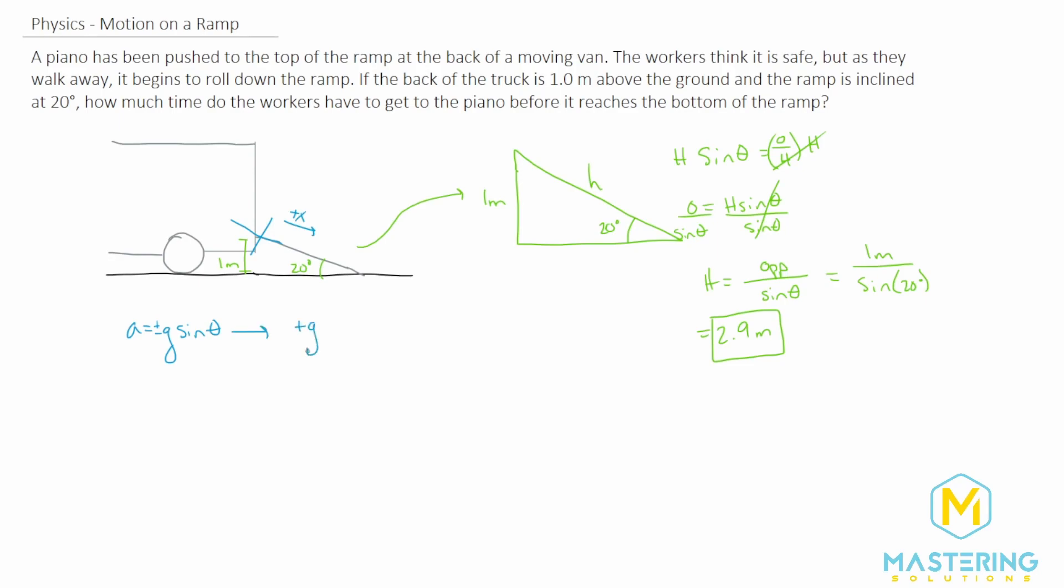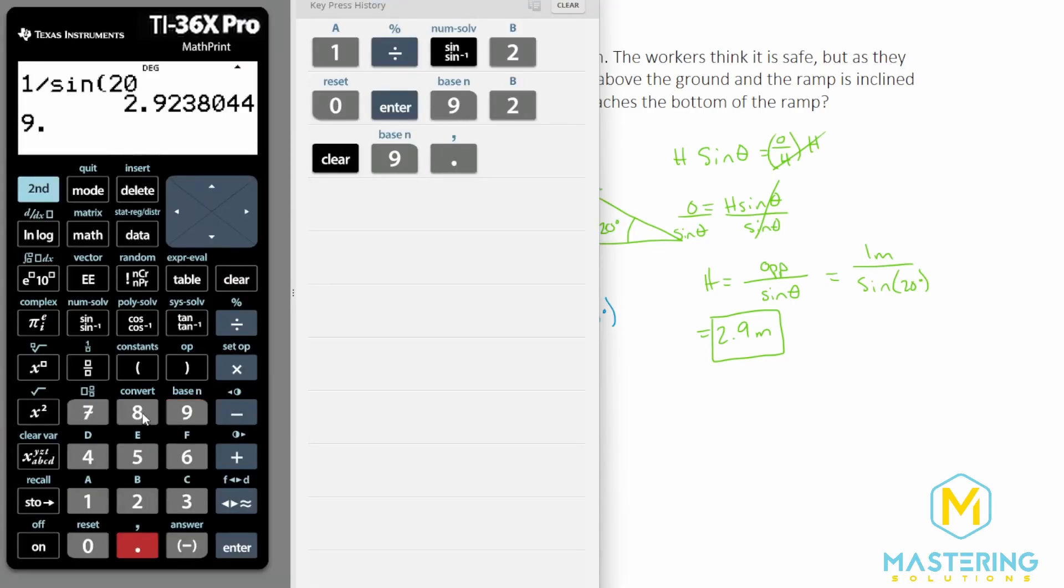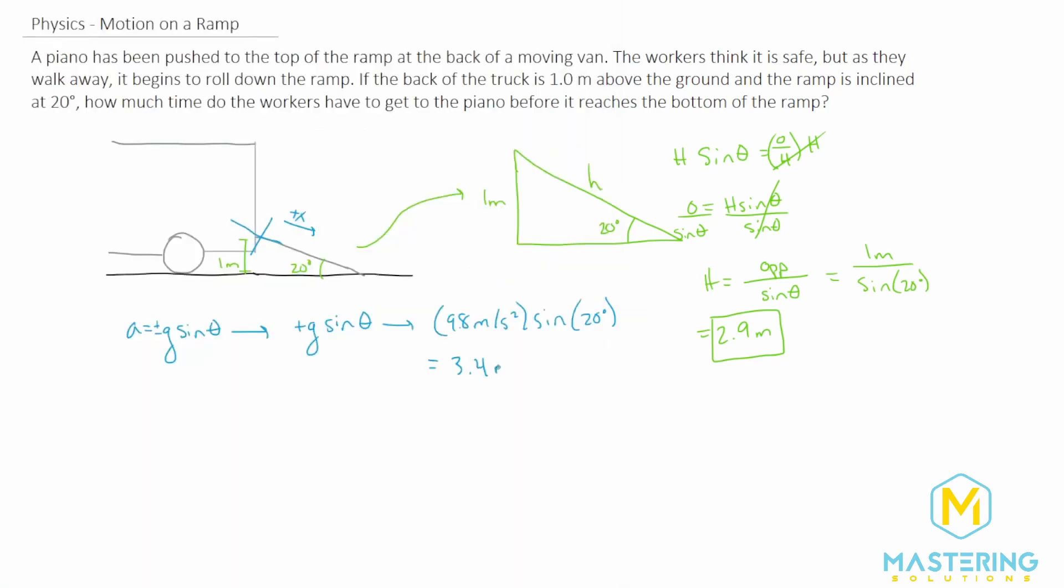So we have positive G times sine of the angle theta, so we have 9.8 meters per second squared times sine of 20 degrees will give us the acceleration for the piano as it's going down the ramp. 9.8 times sine of 20 gives us an acceleration of 3.4 meters per second squared.